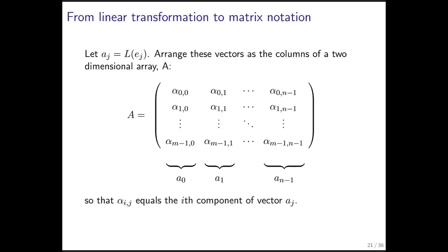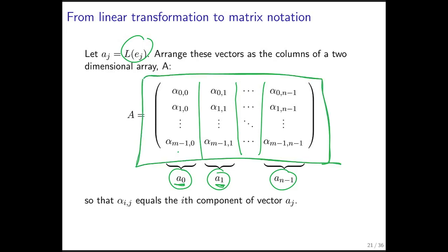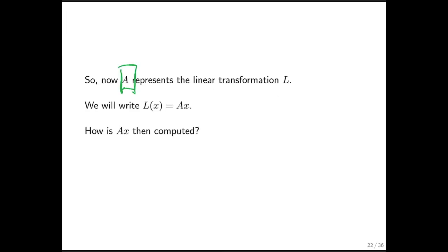So what is a matrix? If you take these vectors — the transformed unit basis vectors — and organize them in a two-dimensional array, so that the first column is that first vector A0, the second column is that second vector A1, and so on, then that array of numbers completely describes L. This is called the matrix that describes the linear transformation L. A matrix is merely a convenient way of storing information about a linear transformation.